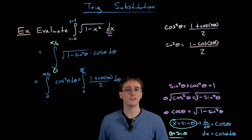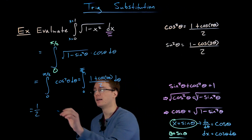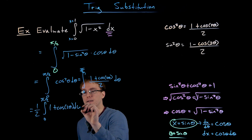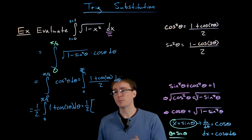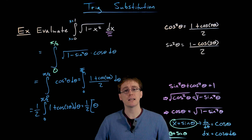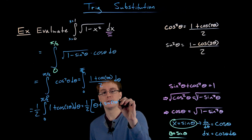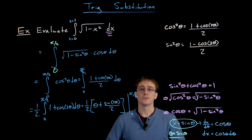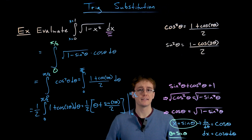Now we're in a position to evaluate our integral. We bring out the factor of 1/2 since it is a constant factor, leaving the integral from 0 to pi over 2 of 1 plus cosine of 2 theta dθ. We find the antiderivative term by term: the antiderivative of 1 with respect to theta is theta itself, and using a quick u-substitution, the antiderivative of cosine of 2 theta is sine of 2 theta divided by 2. We evaluate this antiderivative at our limits and take the difference.